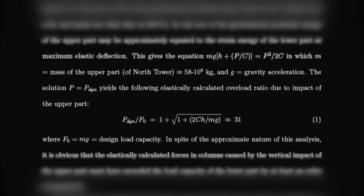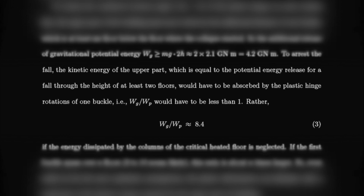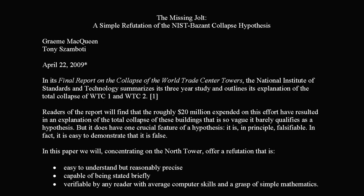That upper section weighed 33 — so again he nearly doubles the mass. Third, he reduces the energy absorption of the columns by three times, using only a third of what it actually was. I wrote a paper with a Canadian professor called 'The Missing Jolt,' where I explained that the building doesn't decelerate. The only way you can naturally defeat the columns is to get an impulse, but you have to decelerate — that's the only natural way.